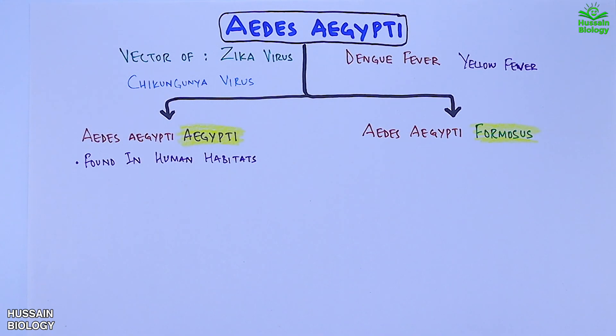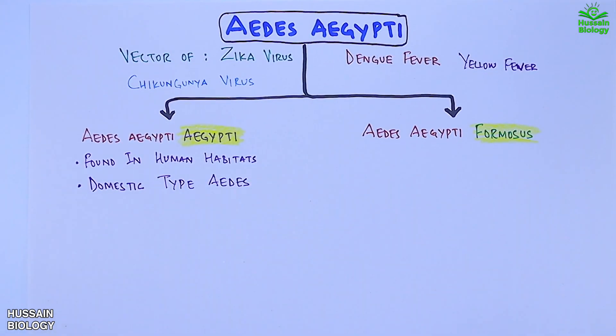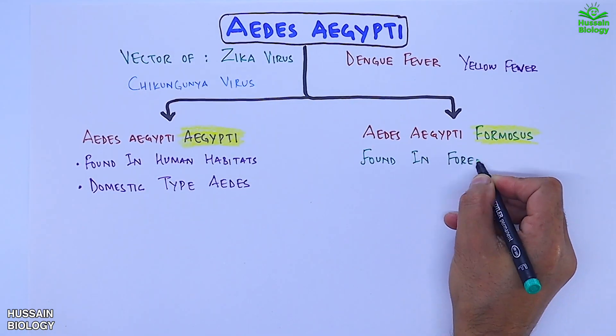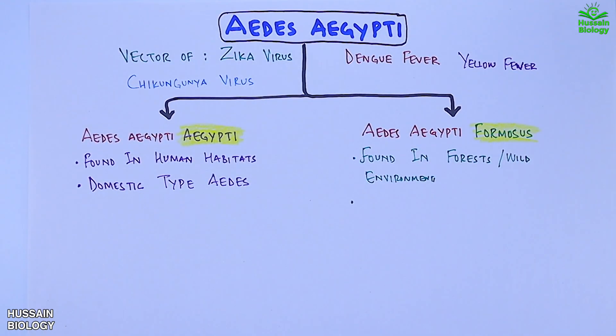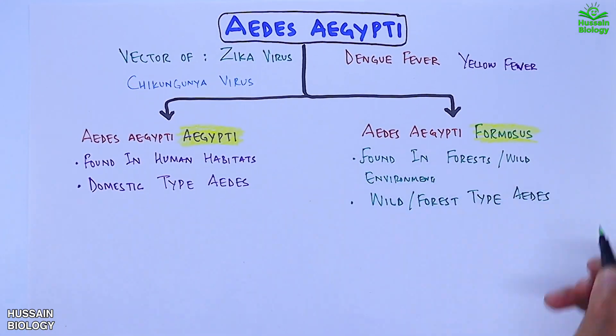The aegypti subspecies is referred to as the domestic type Aedes, whereas the formosus subspecies is found in forest or wild environments and is called the wild or forest type Aedes.